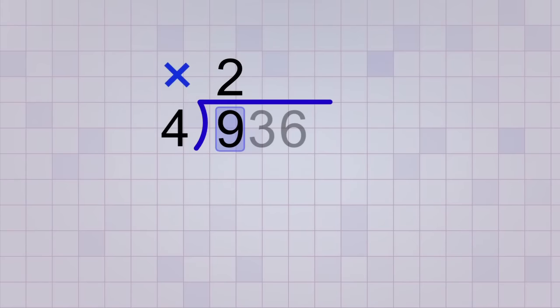Okay, now we multiply. 2 times 4 is 8, and the 8 goes below the 9 so that we can subtract to get our remainder. 9 minus 8 is 1, so our remainder is 1.